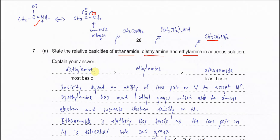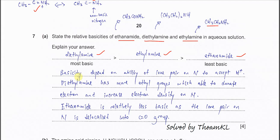So the trend is: diethylamine is the most basic, followed by ethyl amine, and then ethyl amide. Basicity depends on the ability of the lone pair on nitrogen to accept H⁺ — the more available it is, the more basic. Diethylamine has two ethyl groups able to donate electrons, increasing electron density on nitrogen.